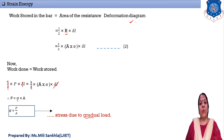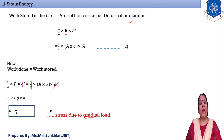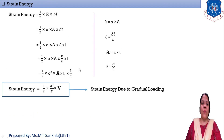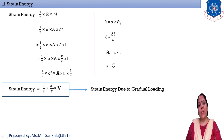Now we find the strain energy for gradual loading. Strain energy = work stored = ½ × R × δL. The value of R = stress × area = σ × A. From the definition of strain, δL/L = strain, so δL = strain × L. Young's modulus E = stress/strain.